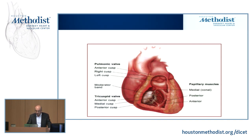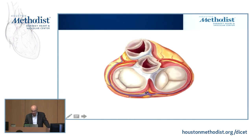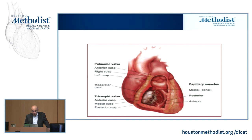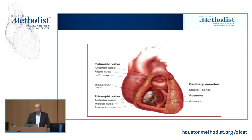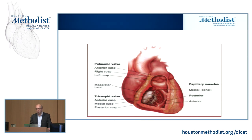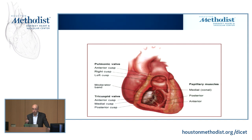A little bit of an anatomy lesson first. The tricuspid valve is the most caudally placed of all four valves in the heart. Here you see a cutaway of the right ventricle, which shows the tricuspid valve. There are three leaflets: the septal leaflet, the anterior leaflet, and the smallest of all, the posterior leaflet. There are typically three papillary muscles in the right ventricle, each typically with three heads, and each papillary muscle is typically attached to two of the three leaflets.